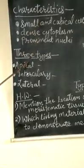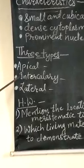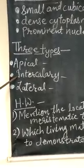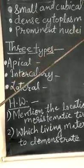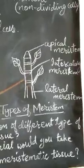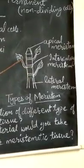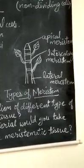Meristematic tissue is of three types. First one, apical. Second, intercalary. Third one, lateral. You can see the location of different meristematic tissues in a plant. So first I am going to explain about apical meristem.